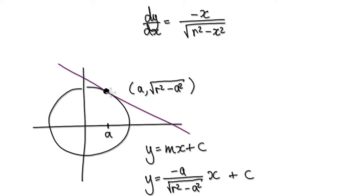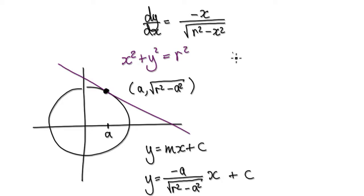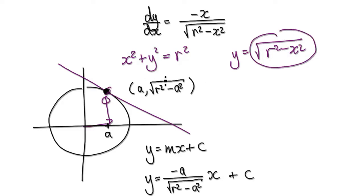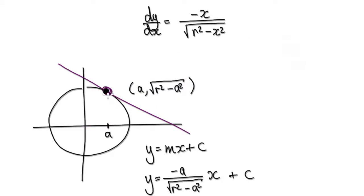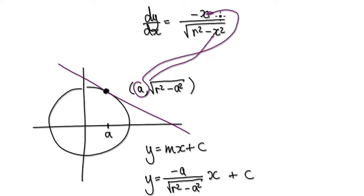We want to know the gradient right at this point. At this point, the coordinates would be a comma, the square root of r squared minus a squared. Because from the start of the video, the equation of a circle rearranged to make y the subject gives y equals the square root of r squared minus x squared. So the coordinates here would be a across and this much up. To find the gradient at this point, evaluate dy by dx at x equals a — put a into the numerator and a into the denominator. So the gradient at point a is our m. We've done m now.